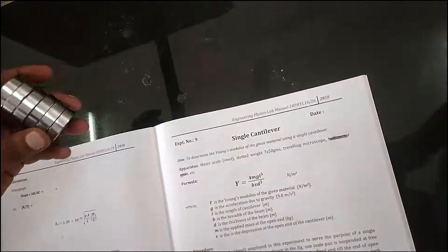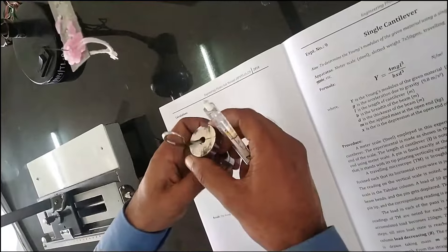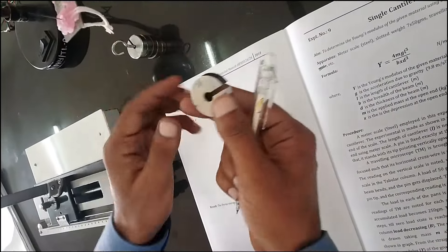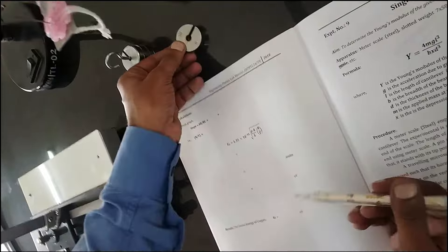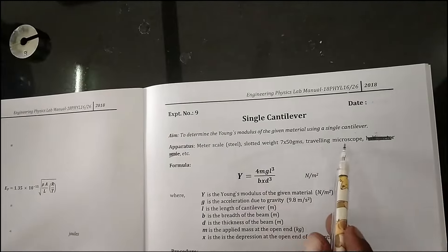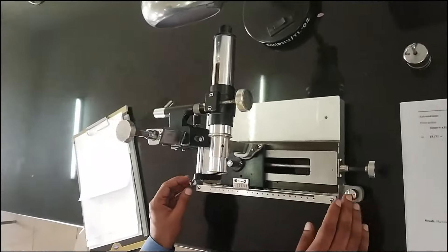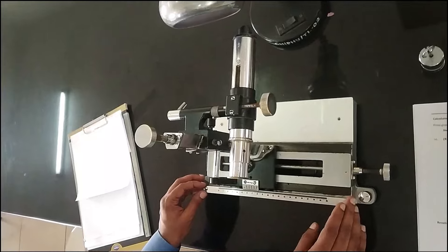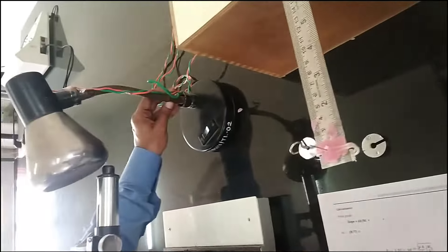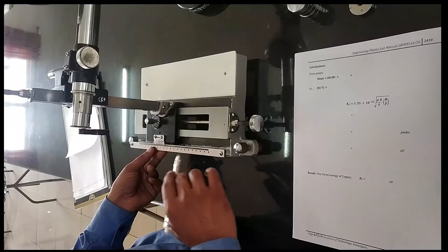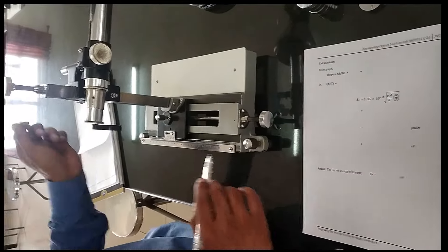Some slotted weights — these are the slotted weights, each having 50 grams. Next, we need a traveling microscope. And other things like a table lamp to read the main scale readings and the vernier readings.